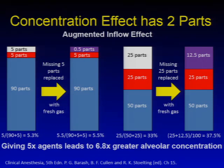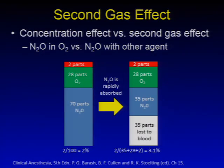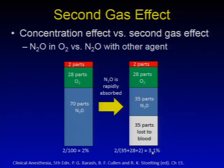This is largely theoretical because most gases we give are not at those kinds of concentrations — desflurane's MAC is about 6%, nowhere near 50%. It only becomes practical with nitrous, which is why we talk about the second gas effect. The second gas effect is just the concentration effect applied specifically to nitrous. Nitrous and oxygen versus nitrous with another agent becomes the second gas effect. If the test question has nitrous with an agent versus nitrous and oxygen, you're talking about the second gas effect.